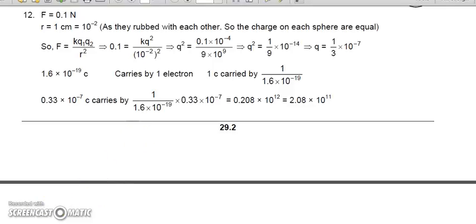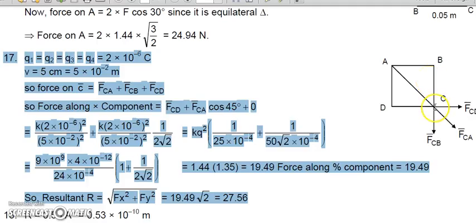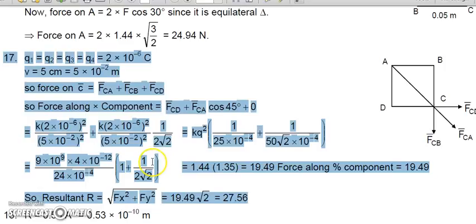Question number 17: four charges are placed at the corners of a square of a given side length. You have to find the force experienced by any one charge due to the other three. Take the vector summation of the three forces on that charge. Looking at the diagram, we find the force on the charge at C due to charges at A, B, and D — these are three forces. Using the resultant method, we get the net force value.